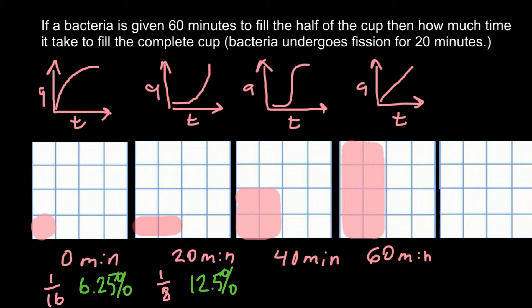At 40 minutes, bacteria occupied four out of sixteen, or one-quarter of the surface, or in other words 25 percent of the petri dish. At 60 minutes, as you see, occupation of the surface by bacteria colonies is one-half or 50 percent.